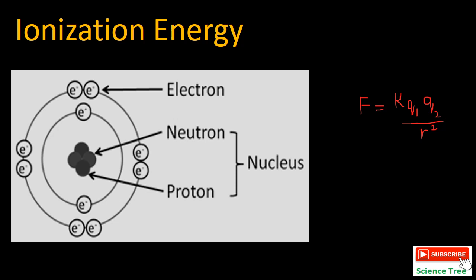Welcome to Science Tree channel. Today's topic is ionization energy from class 9th, chapter number 3. Atoms are made up of electrons, protons, and neutrons.